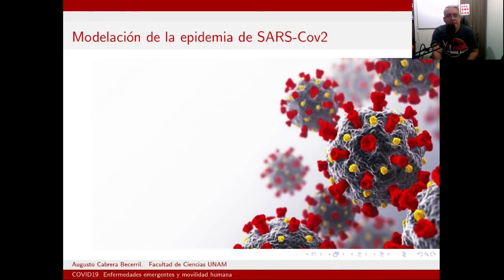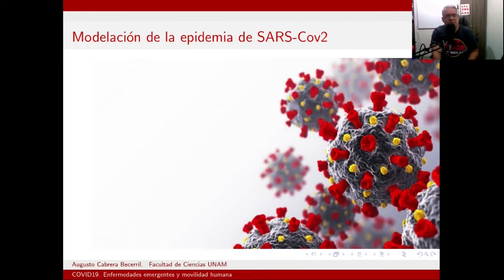Ya había habido otro tipo de coronavirus que se mantuvo más en Asia. Se le llamó SARS-CoV-2 en el año 2005-2006, y se relacionaba con el síndrome agudo respiratorio severo.